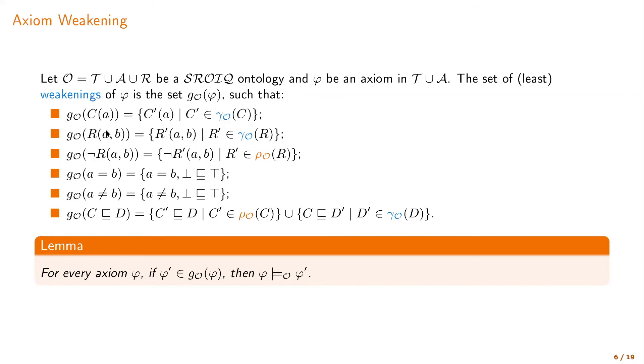Well, if we have, for example, an axiom which says that A and B are related by role R, we can generalize, we can weaken this axiom by saying that A and B are related by some role R prime which is more general. And so on for the other possible axioms of our language.